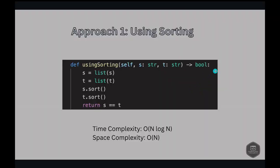First approach is using sorting. This is very straightforward. We convert both input strings into lists and sort them, then check if they are equal. If both sorted lists match, it means s and t contain the same characters in the same quantity. We just convert s to list and t to list, sort s and t, and check for equality.